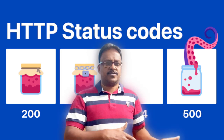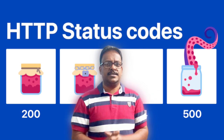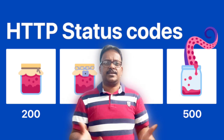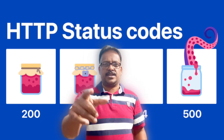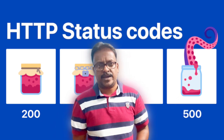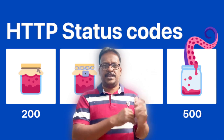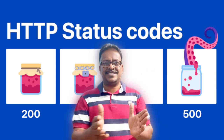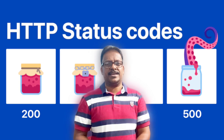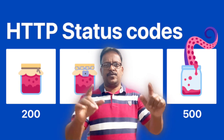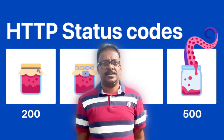Status code 201 means your request is successful and the record has been created. Status code 204 means when you send a request from the client to the server to fetch some data but there is no content, you will get a 204 response. That covers the 200 series HTTP status codes.